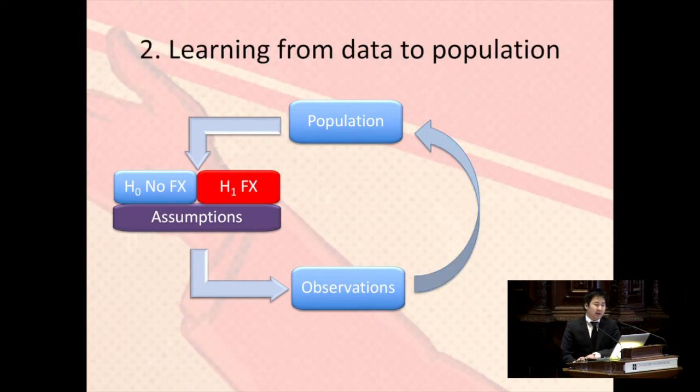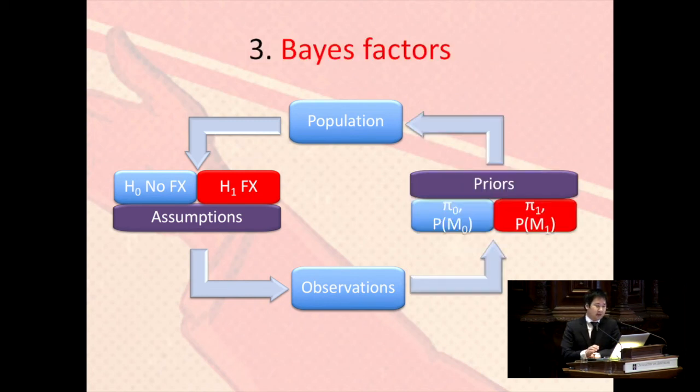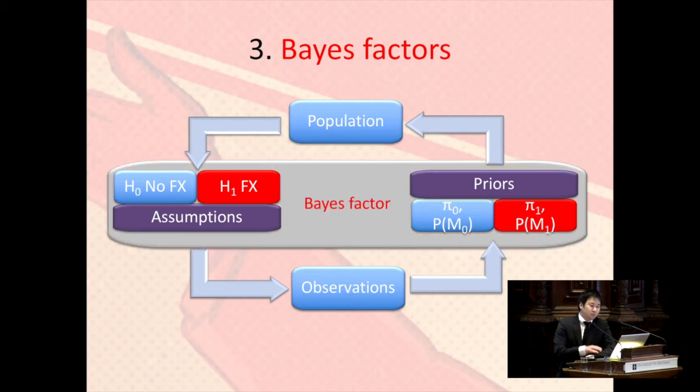Second of all, you have to learn from your data. It's very straightforward. You have to go from observation from your data to your population. That comes with a price. You have to construct priors. And priors are on the right-hand side. And together, this gray box here, that gives you the Bayes factor. That's my job. I have to construct Bayes factors.